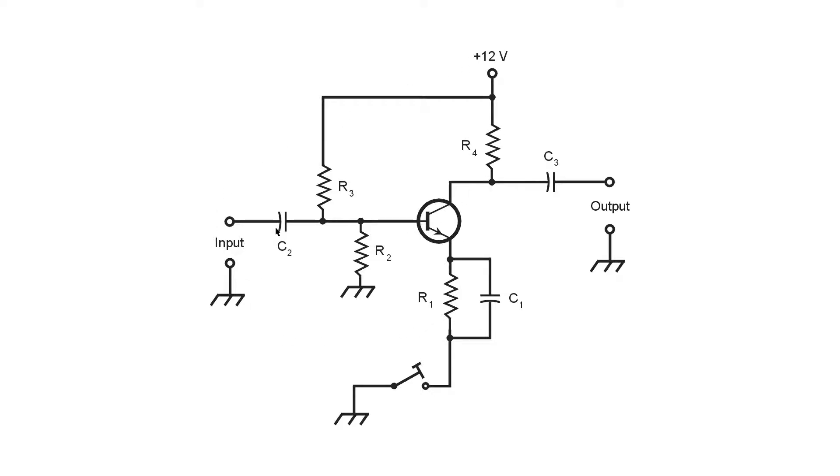The input signal enters through capacitor C2, reaching the base. R2 and R3 provide bias for the base to produce a Class A configuration, more or less.